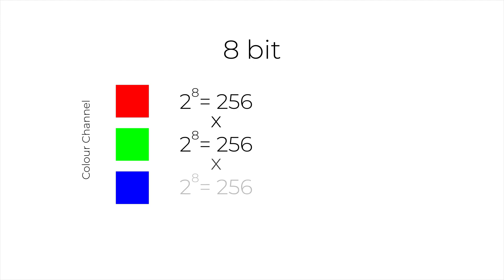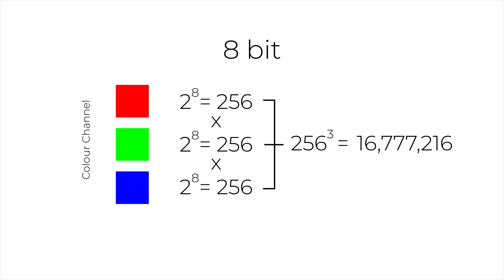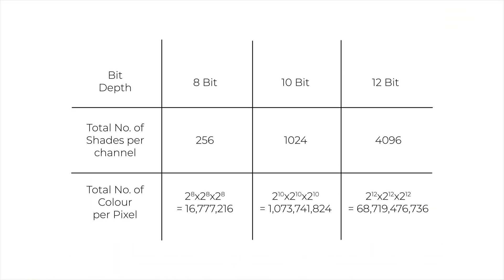In an 8-bit video, each color channel — red, green, and blue — can have 256 possible shades, giving us a total of approximately 16.7 million possible colors. While this seems like a lot, it's quite limited compared to higher bit depths. In contrast, a 10-bit video supports 1024 possible shades per color channel, resulting in over 1 billion possible colors. That's a significant increase.